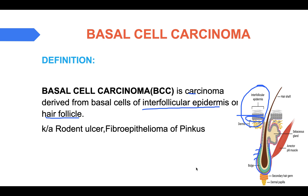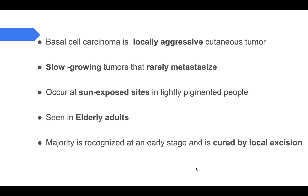The other names by which basal cell carcinoma is known include rodent ulcer — we will understand why shortly — and fibro-epithelioma of Pinkus. The short form BCC is also very commonly used.